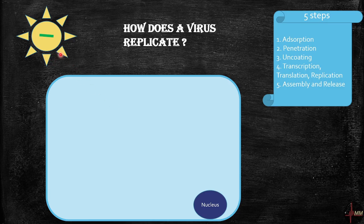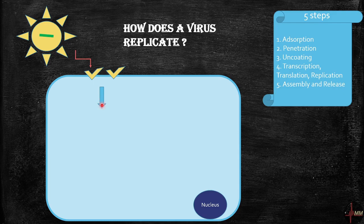This virus has some structural proteins and RNA as its genetic component. The virus attaches to the human cell receptors, and this process is called adsorption. Adsorption is followed by penetration and uncoating, releasing its RNA component into the cell.